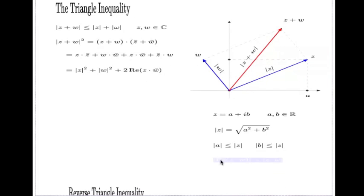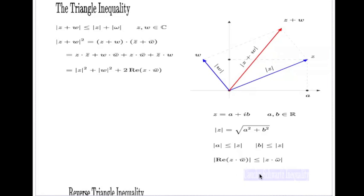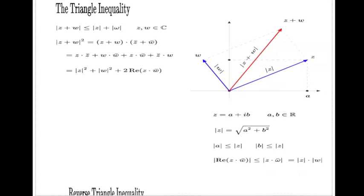Now, looking at the real part of z times w̄, we can think of this product as a single complex number. We just discovered that the real part of a complex number doesn't exceed its absolute value. We also know that the absolute value of a product can be split into the product of individual absolute values, and |w̄| = |w|. So Re(z·w̄) ≤ |z|·|w|.